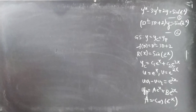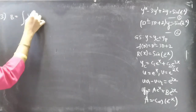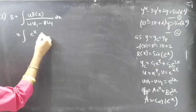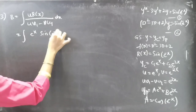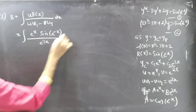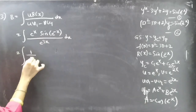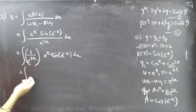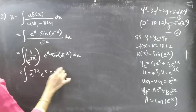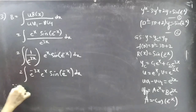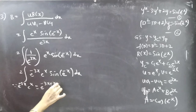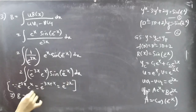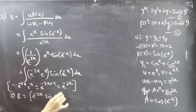Now let's find b. b = ∫(u·R(x))/(u·v' - v·u') dx = ∫(e^x·sin(e^(-x)))/e^(3x) dx. We can write this as ∫(e^(-3x)·e^x)·sin(e^(-x)) dx = ∫e^(-2x)·sin(e^(-x)) dx, since e^(-3x)·e^x = e^(-2x). So b = ∫e^(-2x)·sin(e^(-x)) dx. Let t = e^(-x).